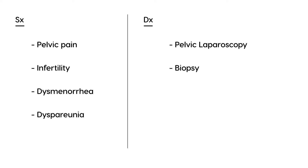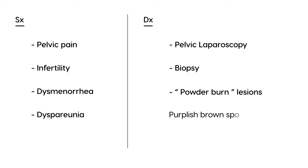During laparoscopy, the lesions are described as powder burn lesions — a term you'll see frequently on licensing exams. These appear as purplish-brown spots resembling powder burns. A biopsy can then confirm that the tissue is in fact endometrial tissue.